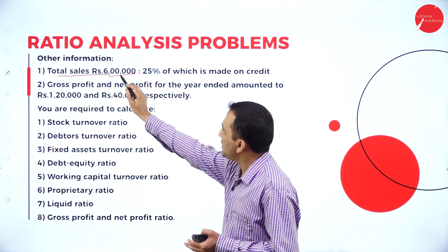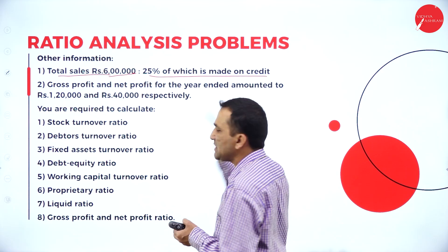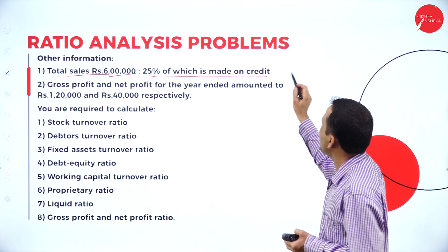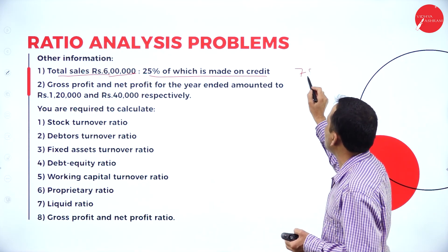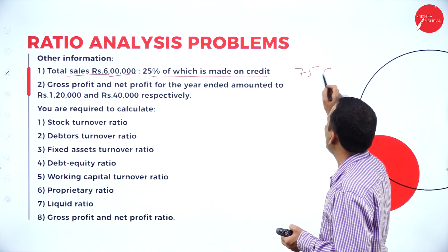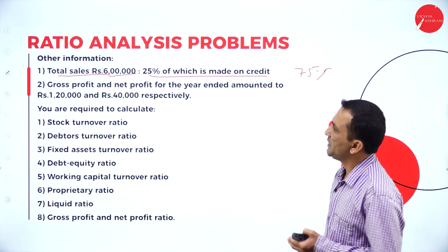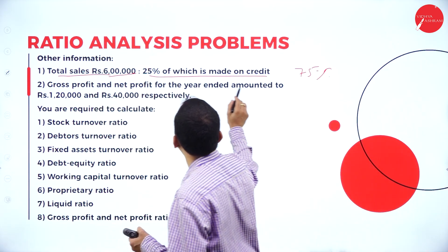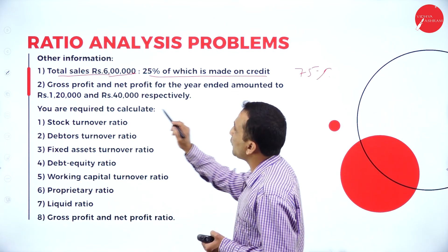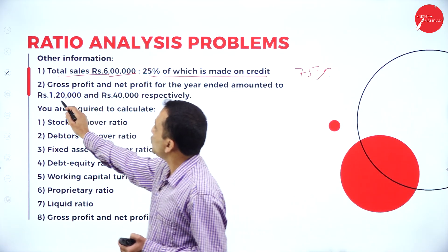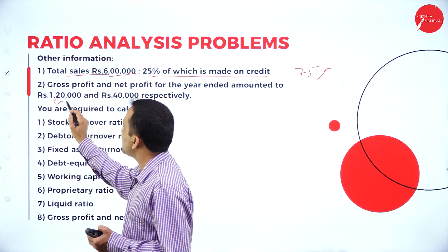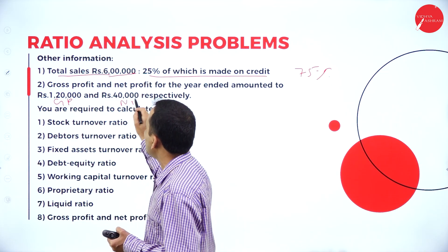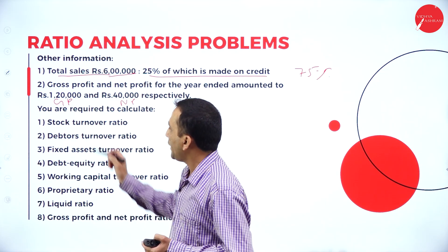From the 6 lakh, 25% is considered as credit sales, so the remaining 75% is cash sales. The gross profit and net profit for the year: gross profit amounted to 1,20,000 and net profit is 40,000.